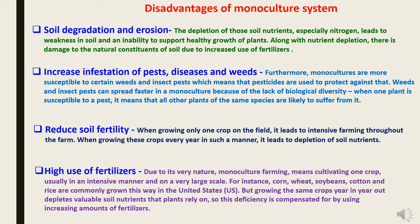Reduced soil fertility is another disadvantage. Growing only one crop on a field leads to intensive farming throughout the farm, and growing these crops every year leads to depletion of soil nutrients. High use of fertilizers results because monoculture farming means cultivating one crop — usually intensively and on a large scale. For instance, corn, wheat, soybeans, cotton, and rice are commonly grown this way in the United States. Growing the same crops year after year depletes valuable soil nutrients that plants rely on, so this deficiency is compensated for by using increased amounts of fertilizers.